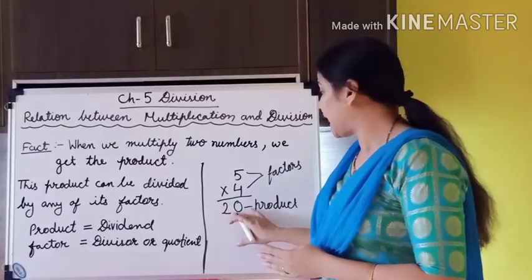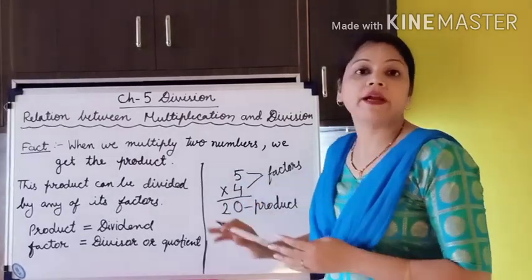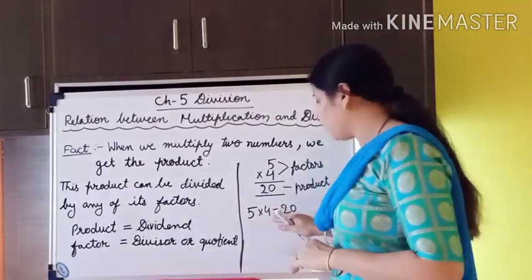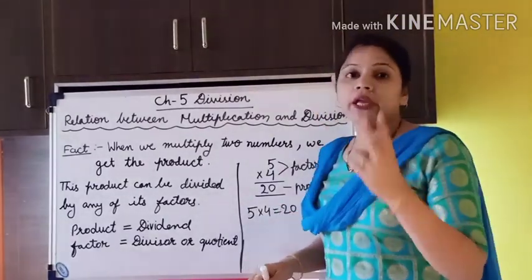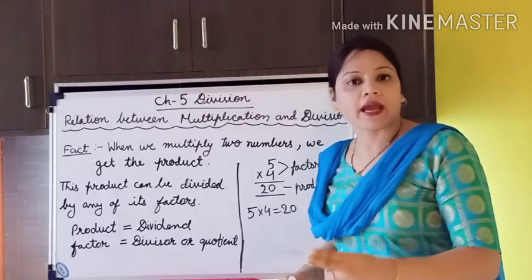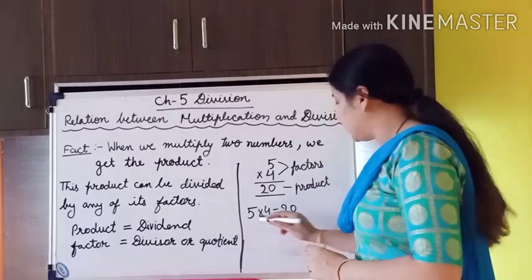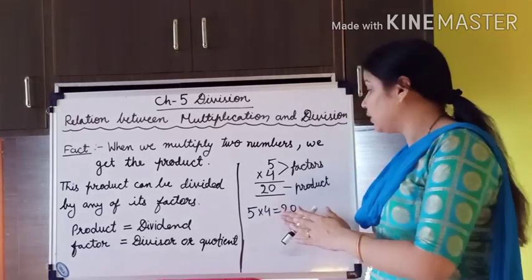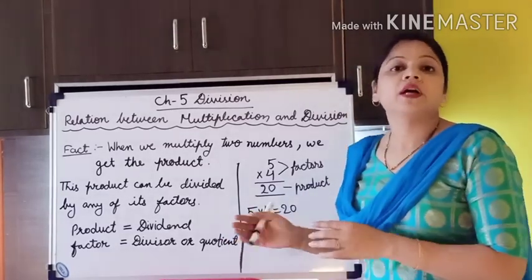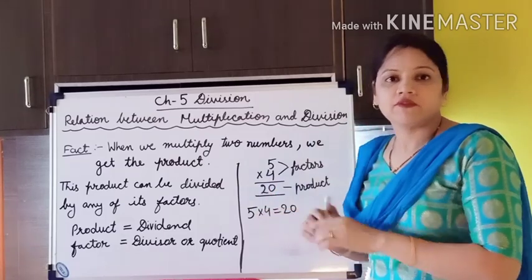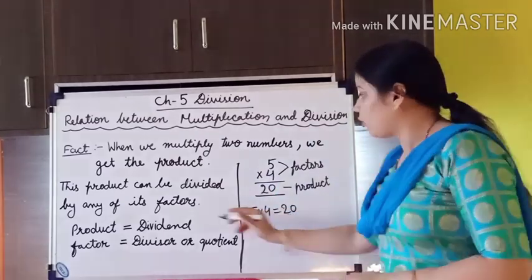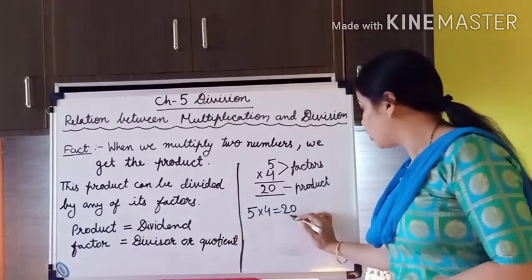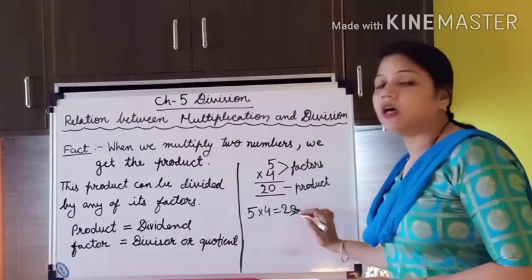This product can be divided by any of its factors. For every multiplication fact we have two division facts. This is one multiplication fact. Now how we can convert this to two division facts? The product is equal to dividend.